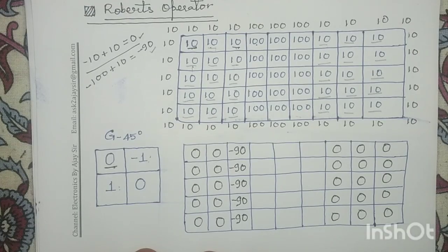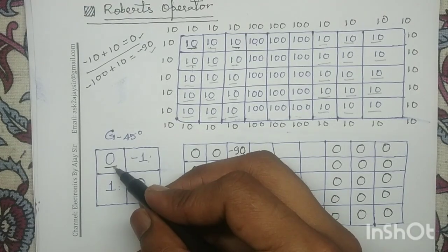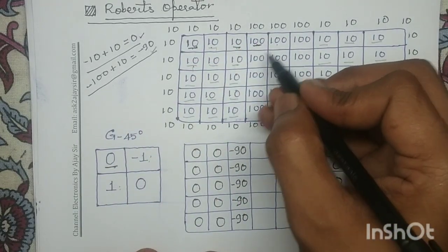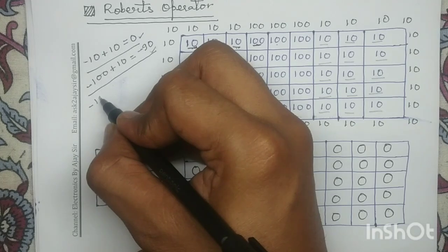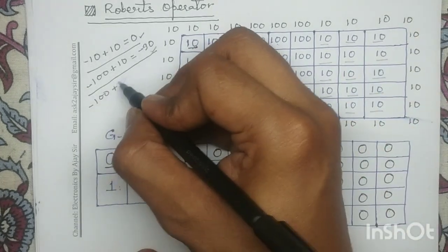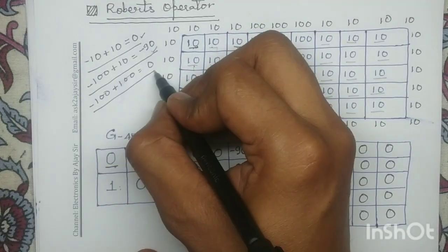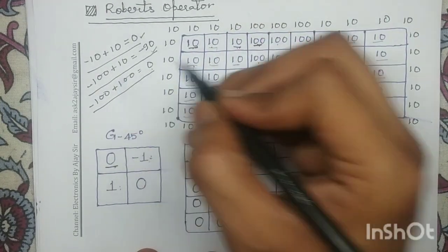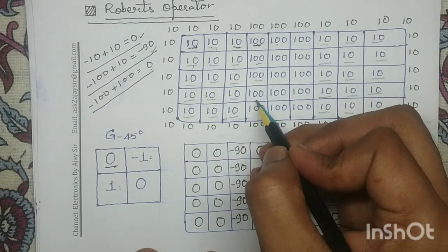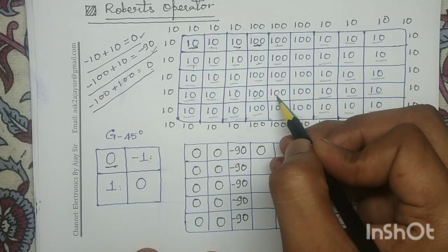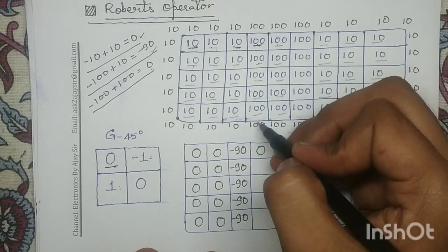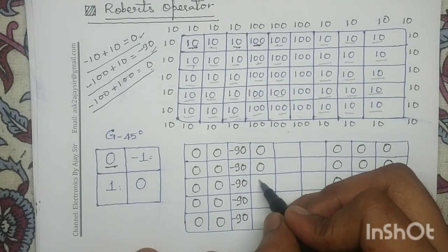Next, we apply the center of this mask at this point. This value 100 is multiplied with coefficient minus 1, and this value 100 is multiplied with coefficient 1. So minus 100 plus 100 equals 0. In the similar manner, for these pixels, the response is also equal to 0.